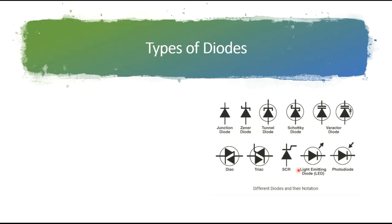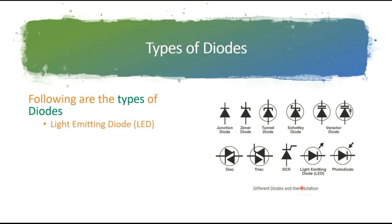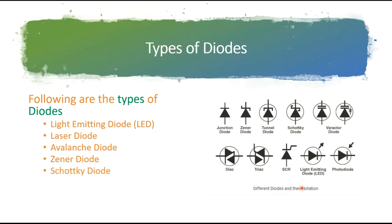These are some of the different diode date notations. Looking at the types of diodes, they are broadly classified into the following categories: Light Emitting Diode (LED), laser diode, avalanche diode, Zener diode, and photodiode. In the upcoming slides we are going to discuss a little bit about all these kinds of diodes.